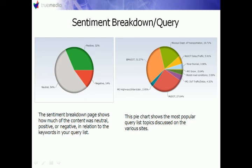The query breakdown shows which topics related to your keywords are being mentioned the most. In this example of Missouri Department of Transportation, you can see that MoDOT and Missouri Department of Transportation are showing up the most, and a few of their other key query searches are showing up almost equally.